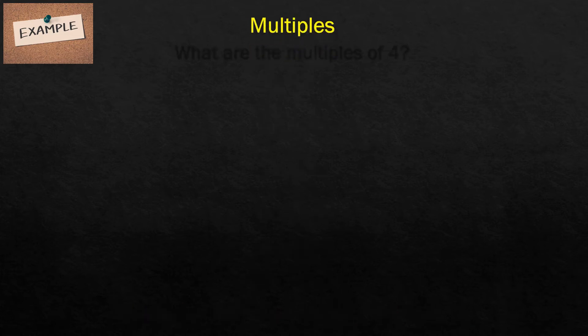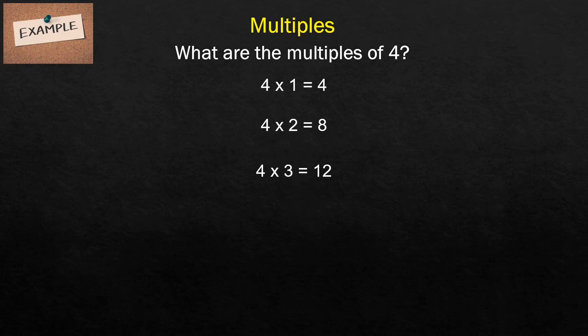Let's have another example. What are the multiples of 4? Let's start with 4 times 1 equals 4. 4 times 2 is equal to 8. 4 times 3 is equal to 12. 4 times 4 is equal to 16. 4 times 5 is equal to 20.